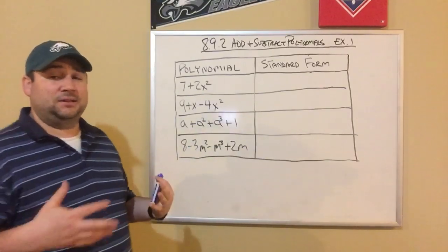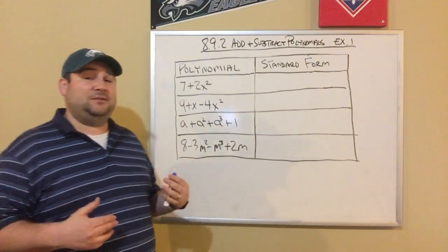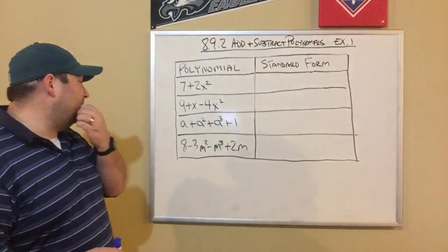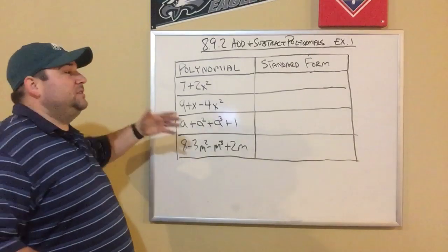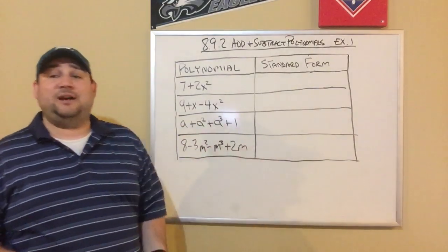Because when you give an answer to any question when you're dealing with polynomials, your final answer needs to be in standard form. And what standard form is, is basically you want the terms with the highest exponent first, and then you want to descend down accordingly.